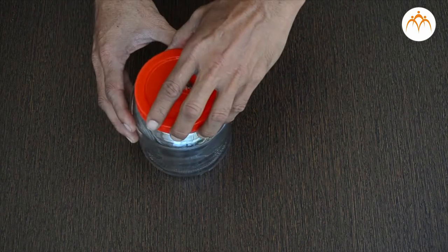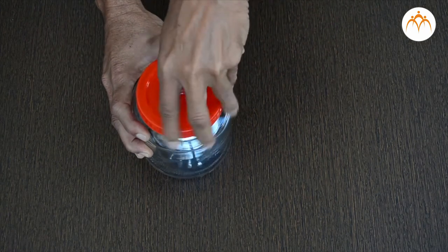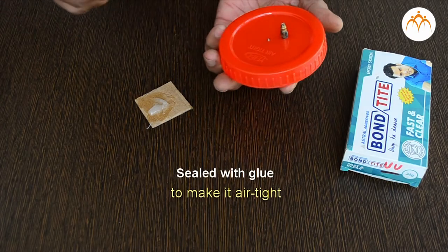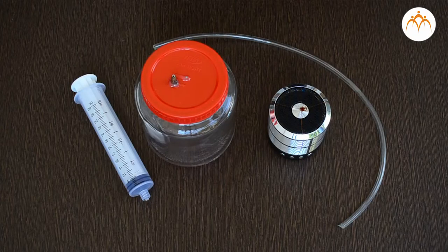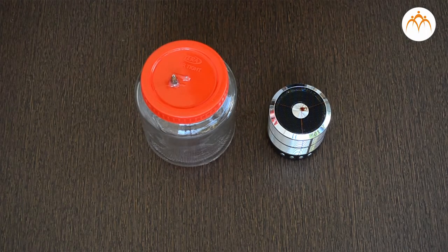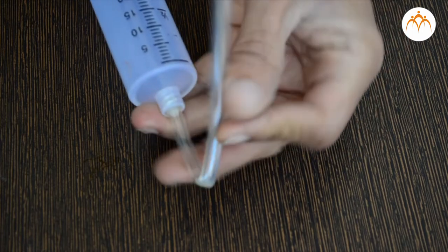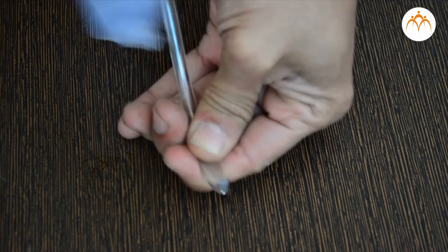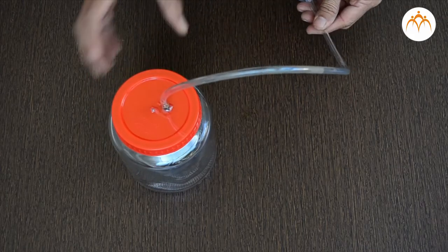We will place the speaker inside the glass container. All openings are sealed with glue. We will use this syringe to take out air from the container. Though it is difficult to take out all the air and create complete vacuum, we can take out some air and create partial vacuum inside.